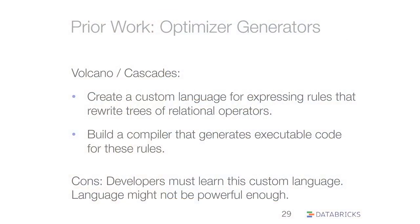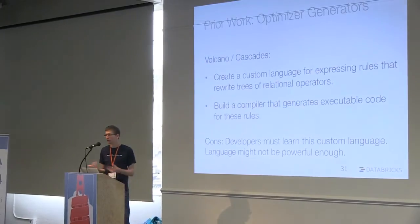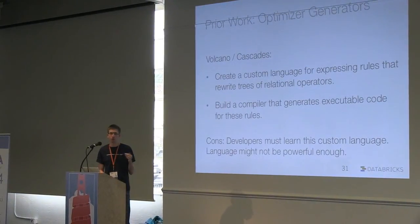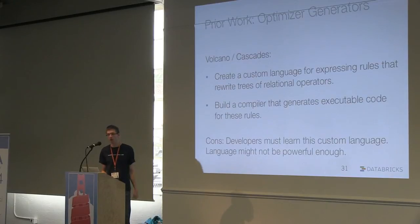So there's been a bunch of work on making it easier to write query optimizers. The old-fashioned way is writing Java or C++ code that implements each rule, looks at objects, and tries to transform them. Some previous systems like Volcano and Cascades actually built a separate programming language for expressing these rules and evaluating them. That makes it easier to write rules, but means database developers have to learn this new language. And if the language isn't powerful enough to express everything you want in your rules, you might not be able to specify things.